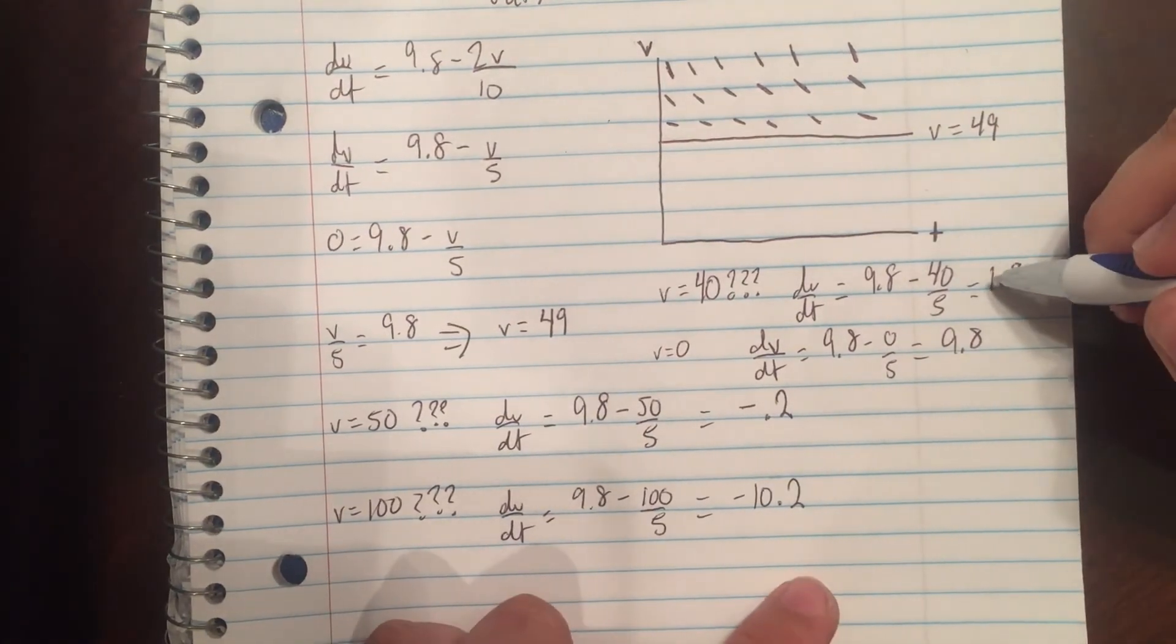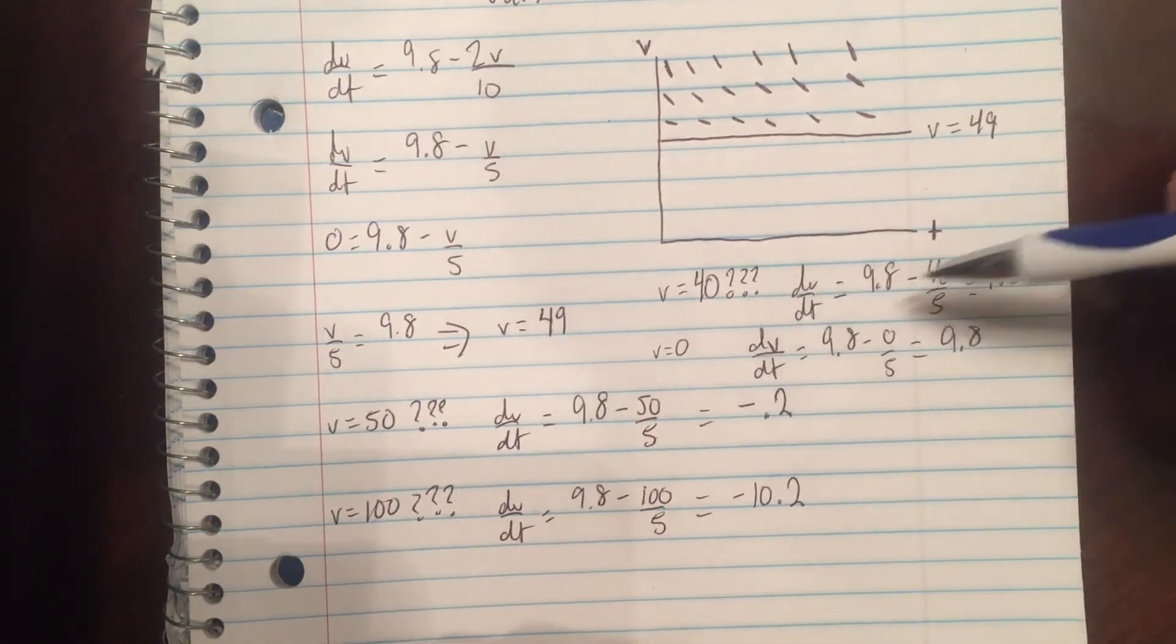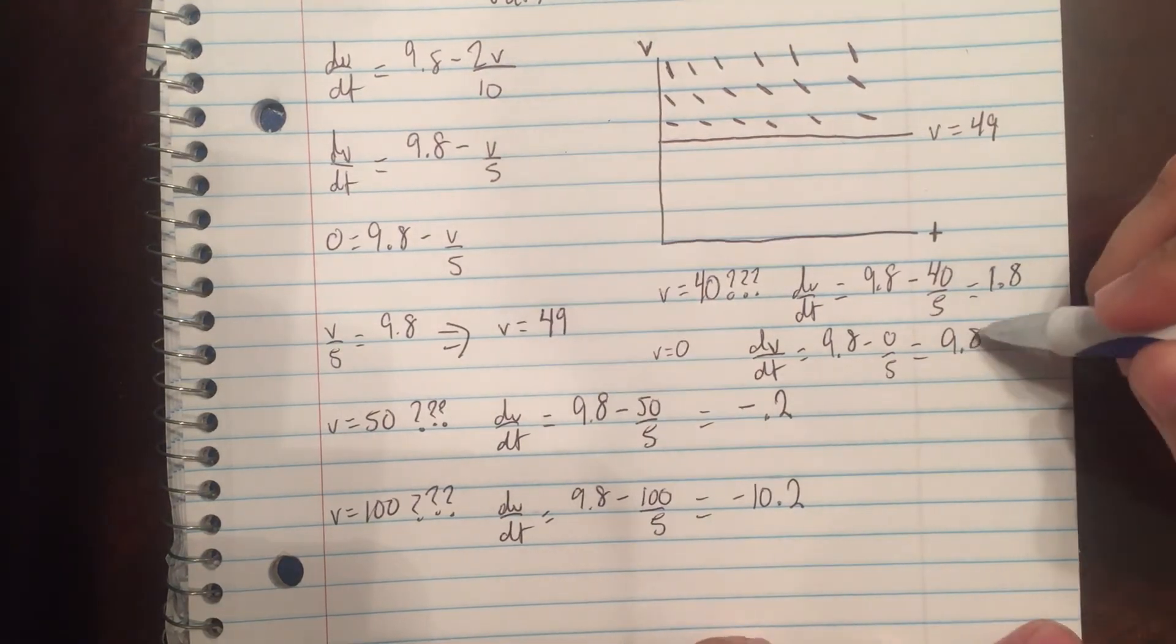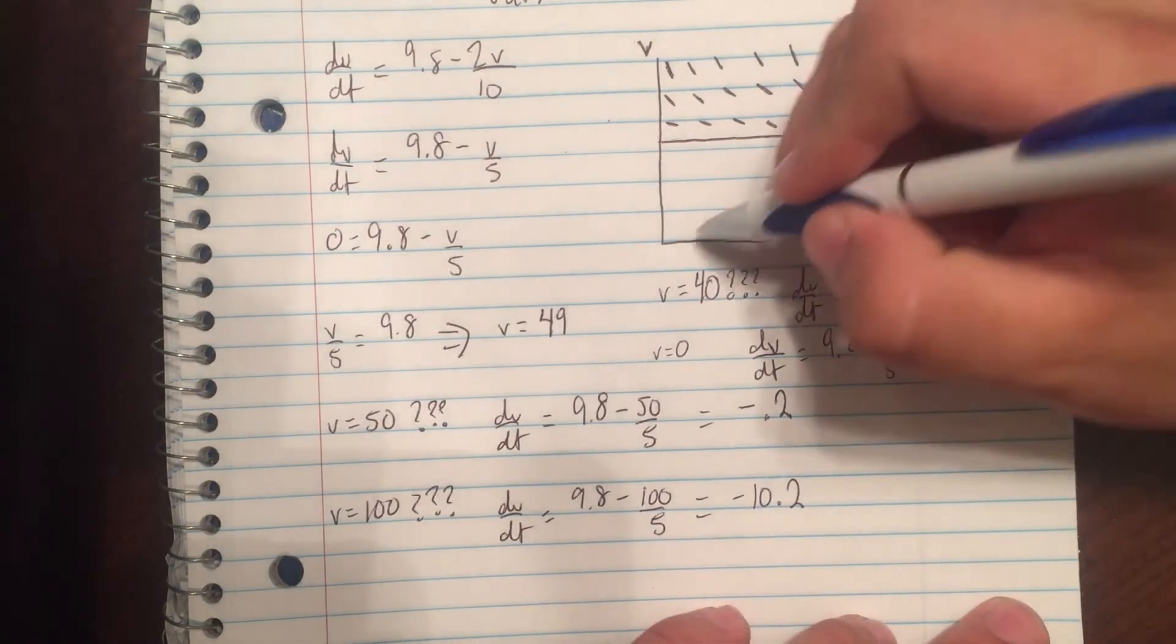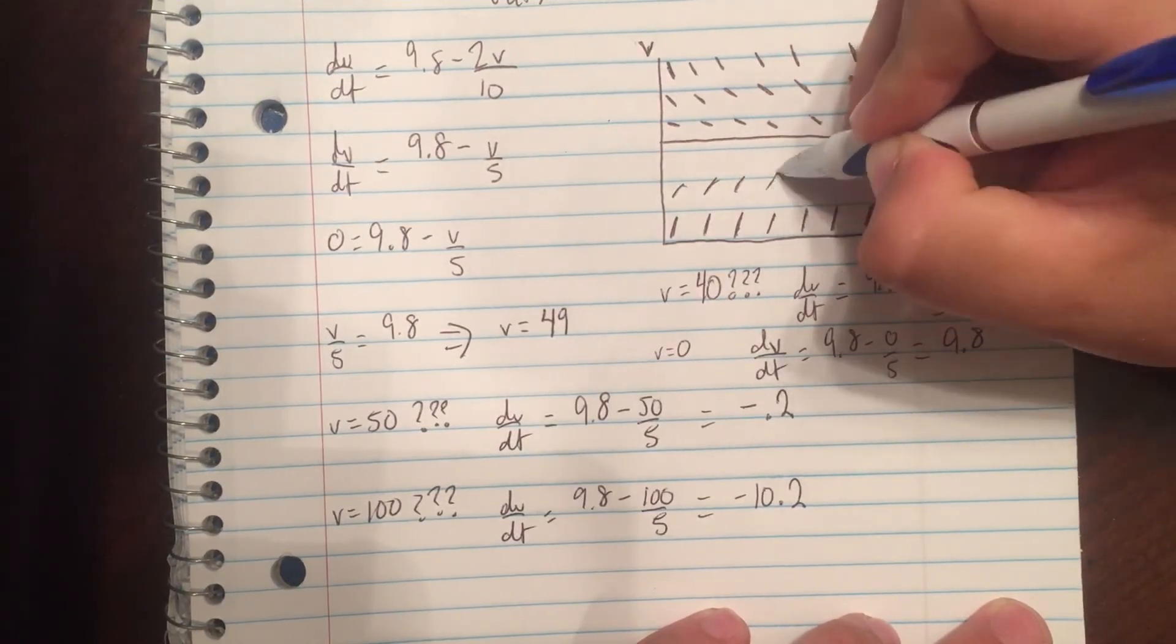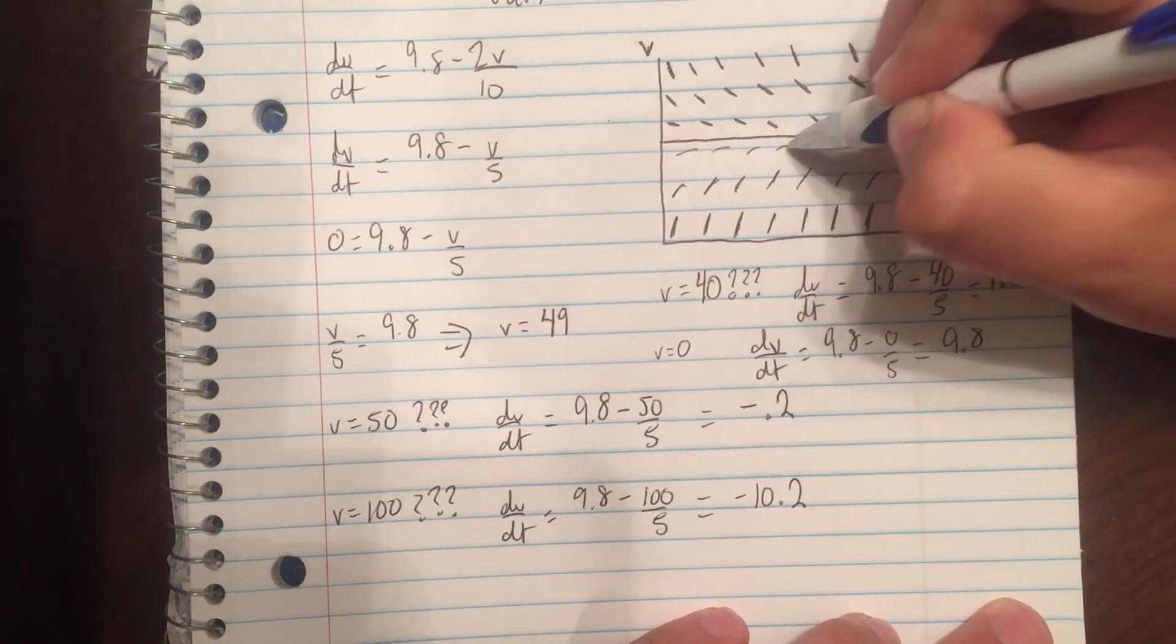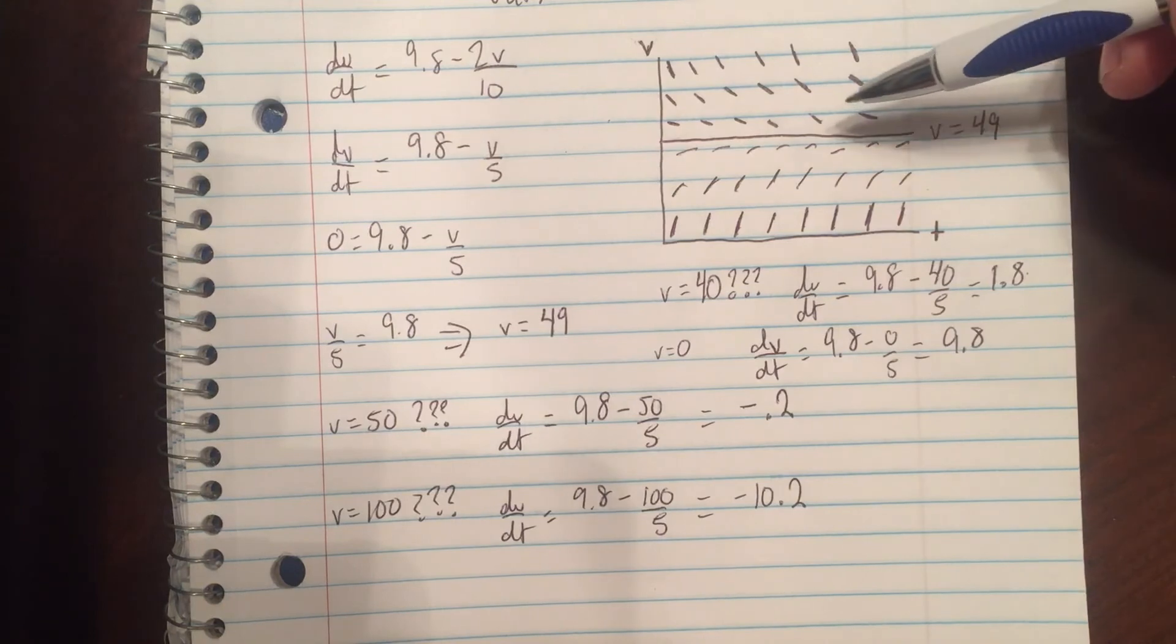We notice that this is actually smaller than this. As v is decreasing, the derivative is actually increasing. This number is much larger than this number, so it means it's flattening out as v gets greater. We will have large slopes in the bottom, and it will slowly be getting flatter. Now we have our completed slope field.